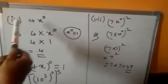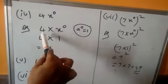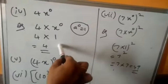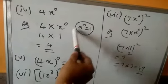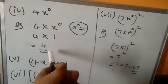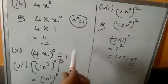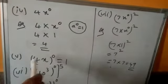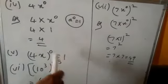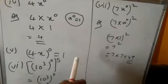Fourth question: 4x to the power of 0. We can write this as 4 into x to the power of 0. Since x to the power of 0 equals 1, substitute 1: 4 × 1 = 4. Fourth one answer is 4. Fifth one: (4x) whole to the power of 0. What is the difference? In the fourth, only x is raised to the power of 0. But here, the whole (4x) is to the power of 0. So this is one number — any number to the power of 0 equals 1. Fifth one answer is 1.